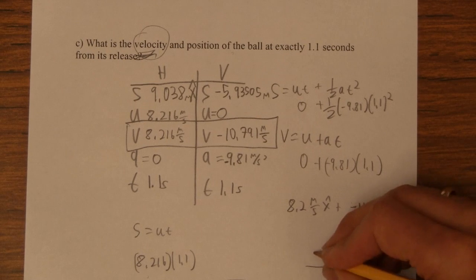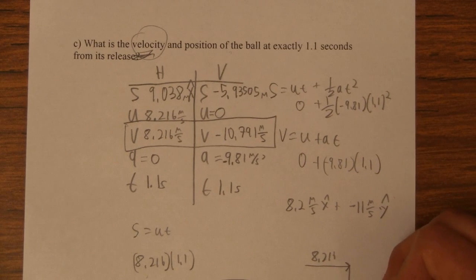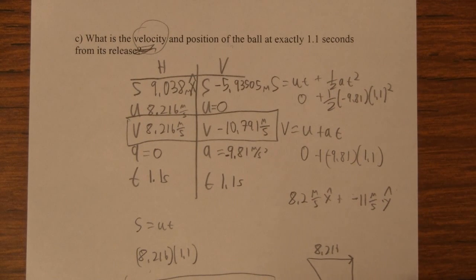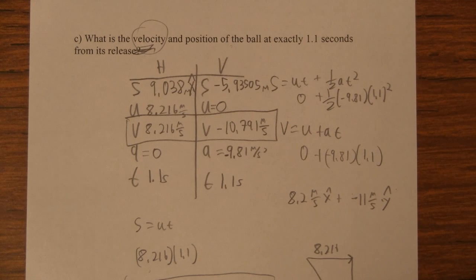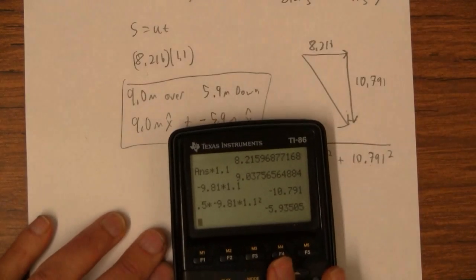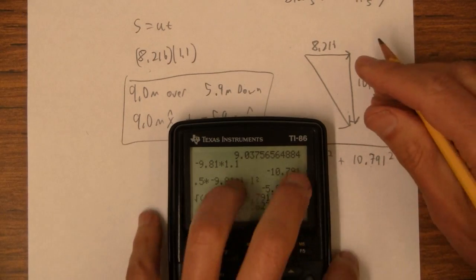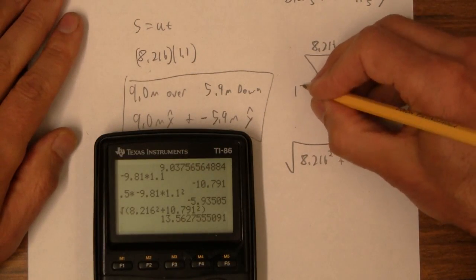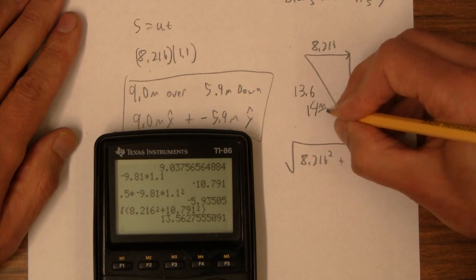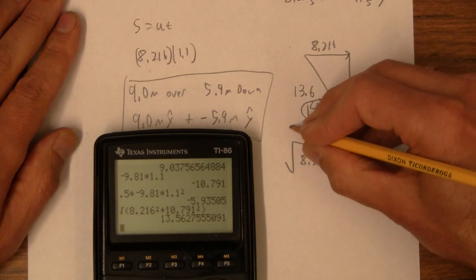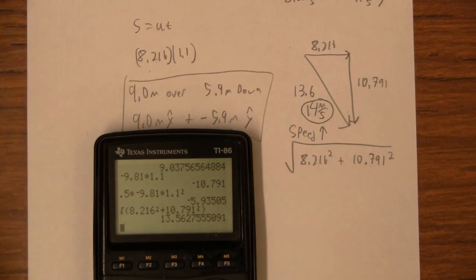Over, down, 8.216 over, 10.791 down. The magnitude is going to be the square root of 8.216 squared plus 10.791 squared. That's 13.56, so I'd have to say 13.6, really we'd have to say 14 meters per second. That's its speed. If somebody says what's the speed, that's speed right there.